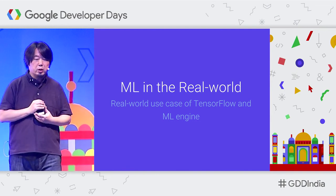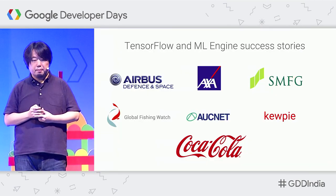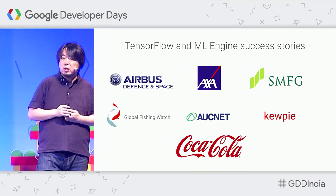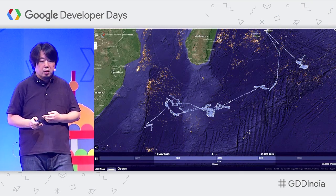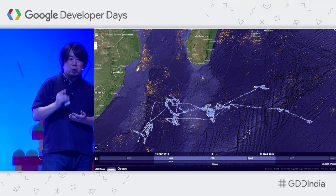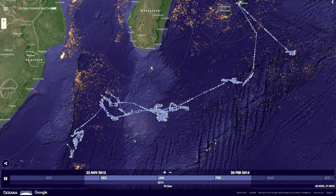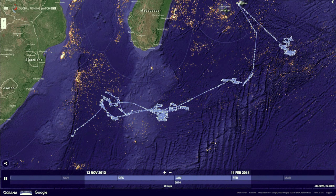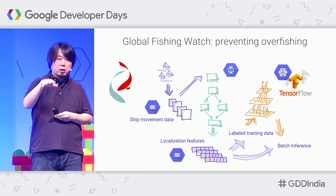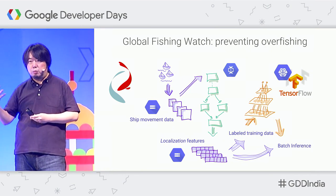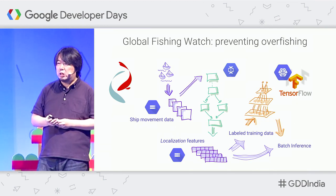Let's look at some real-world examples of customers already using TensorFlow and ML Engine. Companies like Airbus, AXA, SMFG — a megabank in Japan — and Coca-Cola have been using TensorFlow to solve real problems. One project is Global Fishing Watch, which prevents overfishing by tracking GPS positions of over 200,000 vessels in real time. All GPS positions are stored on Google Cloud Storage, and Cloud Dataflow is used for batch processing, with TensorFlow and ML Engine extracting patterns from the movement of ships in the oceans.